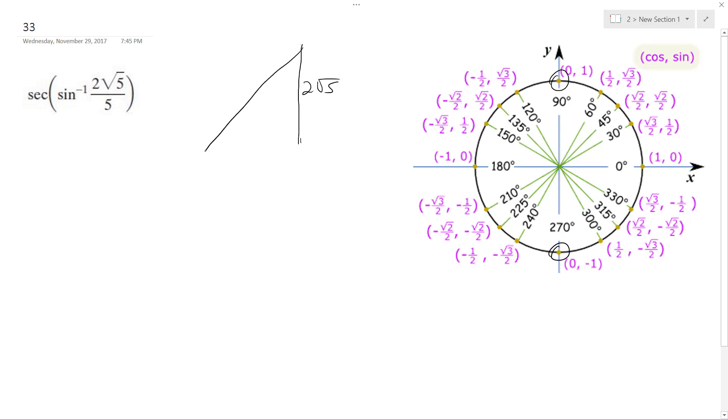I'm just drawing a random triangle, it's not to scale. So this down here is equal to the square root of 5 squared, which is 25, minus 2 root 5 squared, which is 4 times 5, which is 20. So we get the square root of 5.